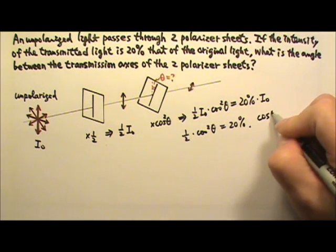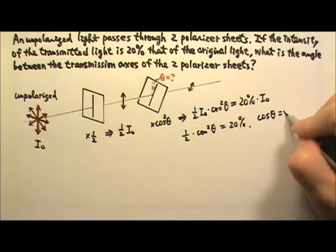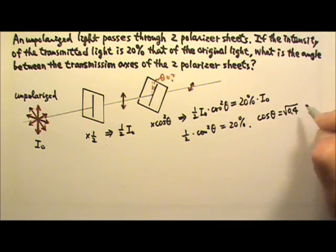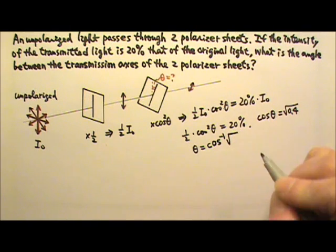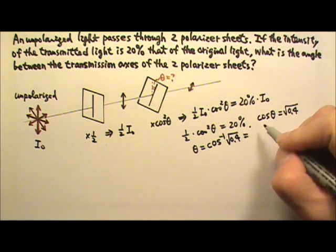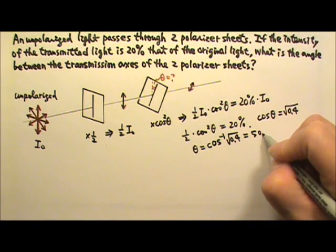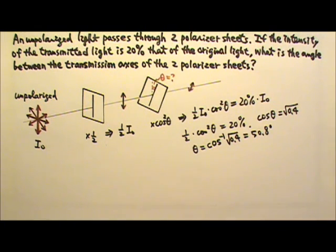Therefore, cosine theta must equal to the square root of 0.4. So if we do the inverse cosine square root of 0.4, we will get the angle to be 50.8 degrees. And that's the angle between these two axes.